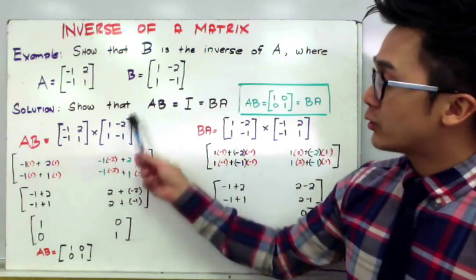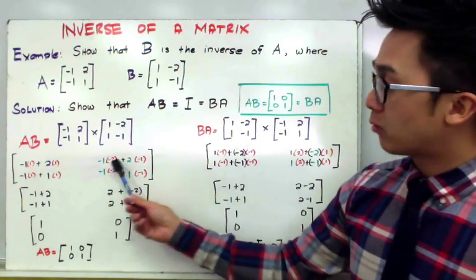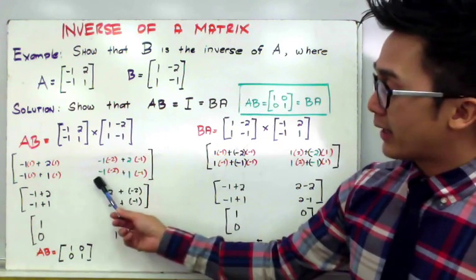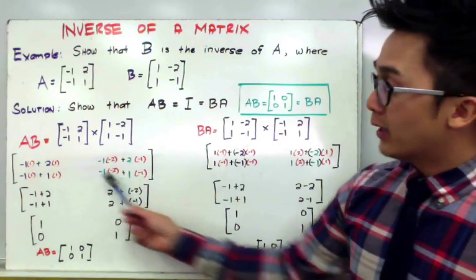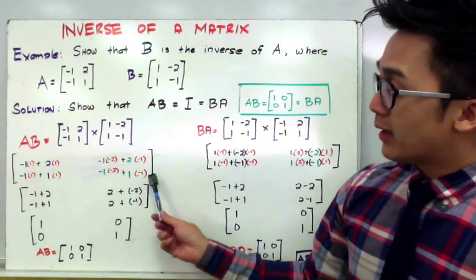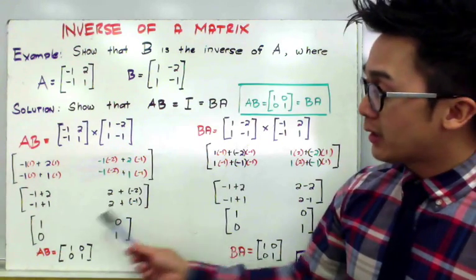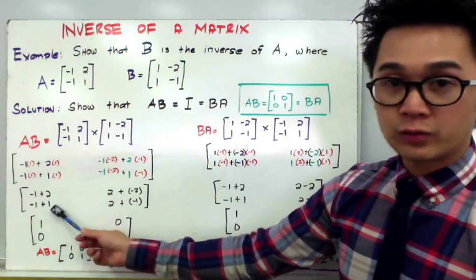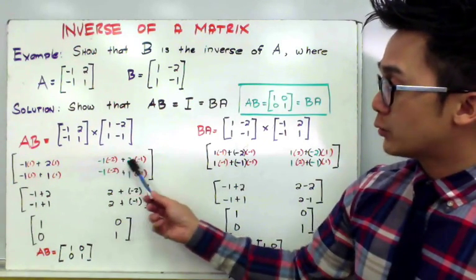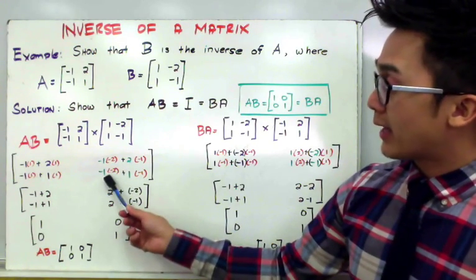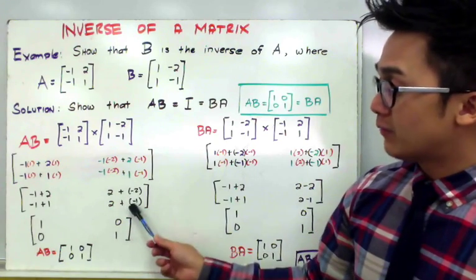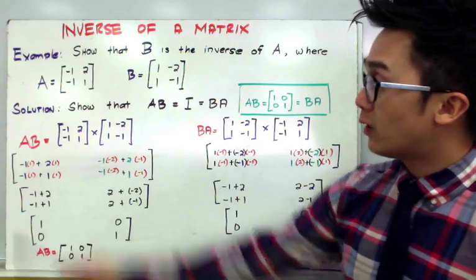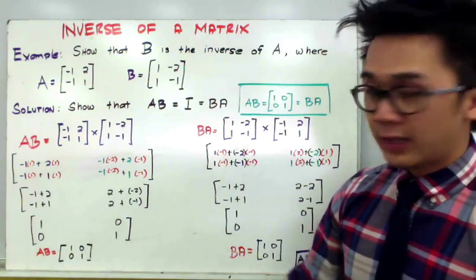The second step is to use the second column of our second matrix and multiply it across the second copy. So we have negative 1 times negative 2 plus 2 times negative 1, and negative 1 times negative 2 plus 1 times negative 1. Simplifying each entry gives us 1, 0, 0, and 1. Therefore, A times B is equal to the identity matrix.